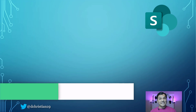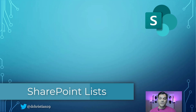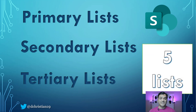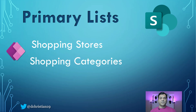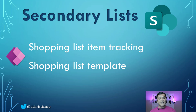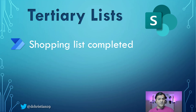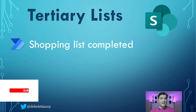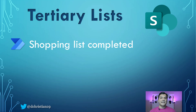Before looking at the Canvas Studio, I want to explain all the SharePoint lists I've used. I've got three different categories: primary, secondary, and tertiary — covering five lists total. The primary list includes the shopping stores and categories. The secondary list references the primary one for shopping list item tracking and the shopping list template. The tertiary list is where anything completed in the shopping list gets moved using a Power Automate Flow.